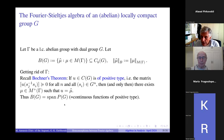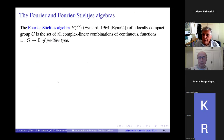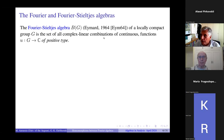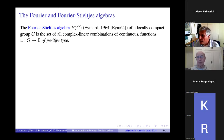Therefore the set of Fourier transforms of all measures — since every complex measure is a complex linear combination of positive measures — is the complex linear span of P of G, where by P of G I mean continuous functions of positive type. So I have rephrased the definition of B of G in a way that does not involve the dual group gamma.